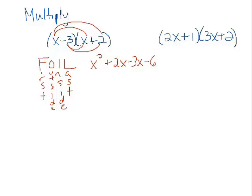And then we want to combine like terms. So in this case, that's our two middle terms here, which leaves us with x squared minus x minus 6. So that's the answer to that one.